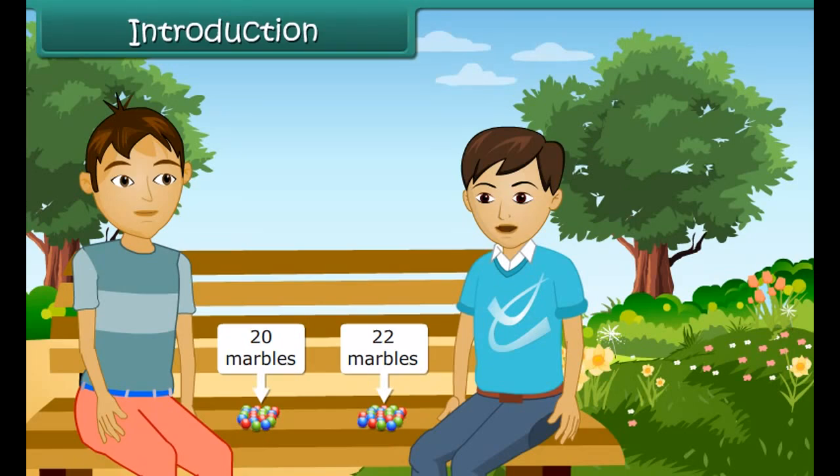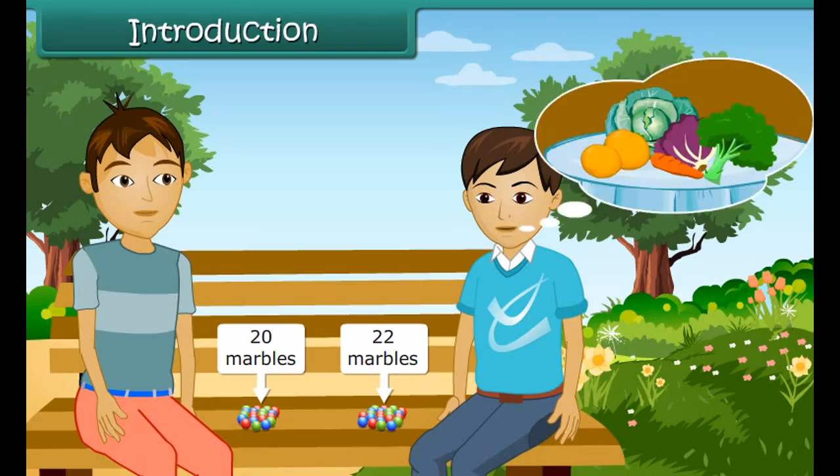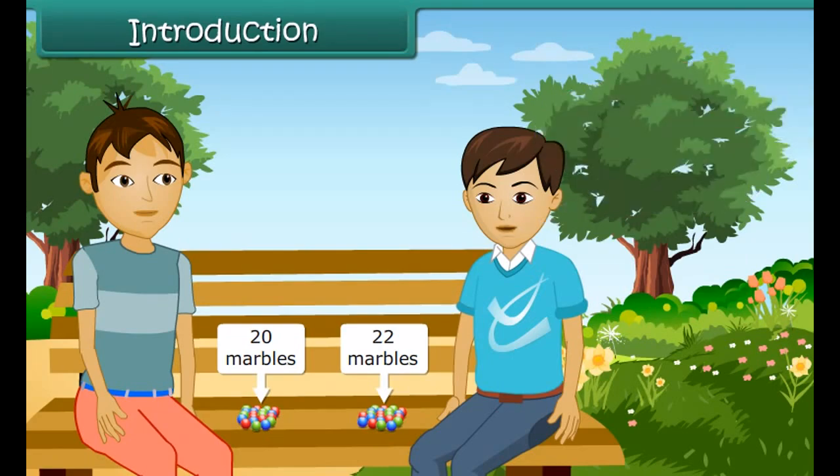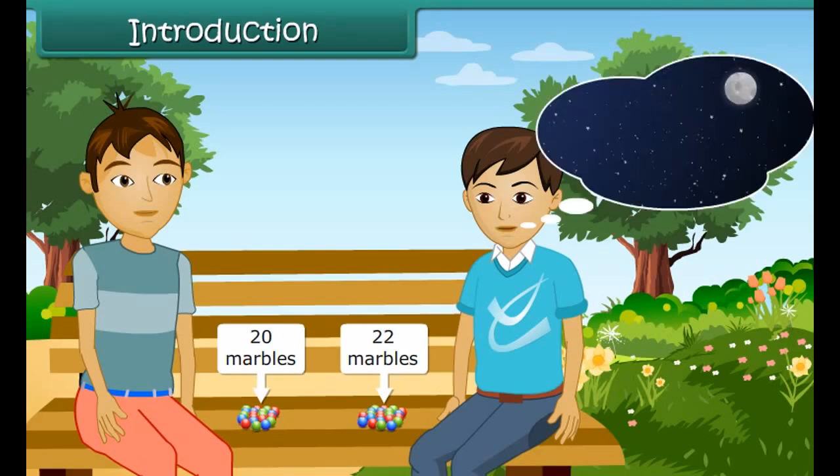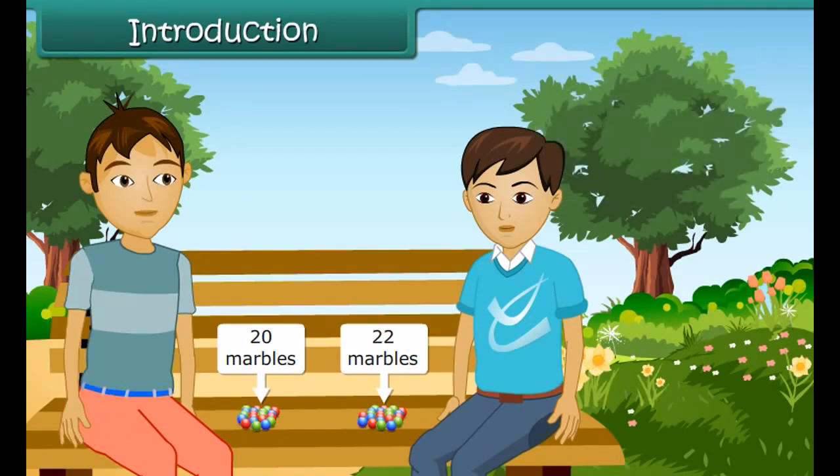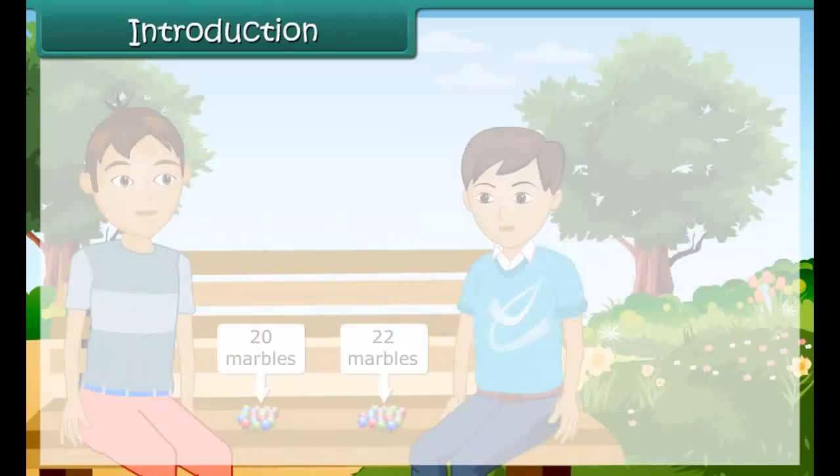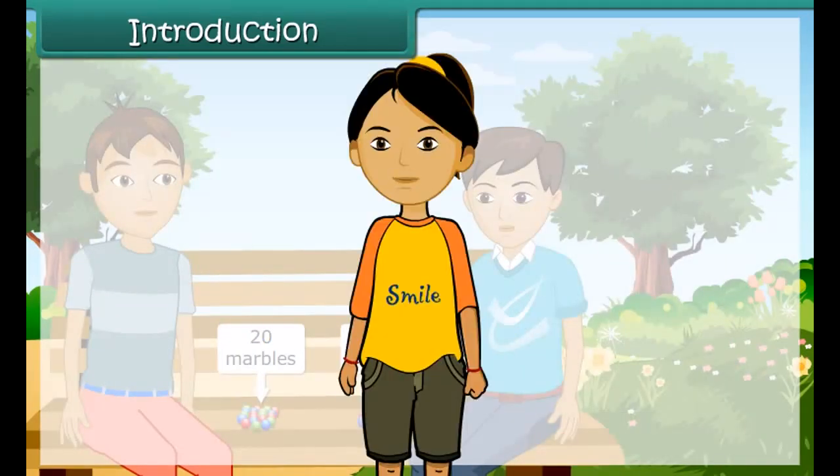We can count the things around us like vegetables, cars, etc. Certain things cannot be counted like stars in the sky, hair on our head, etc. Mathematically, you are talking about whole numbers. Let us learn about whole numbers in this lesson.